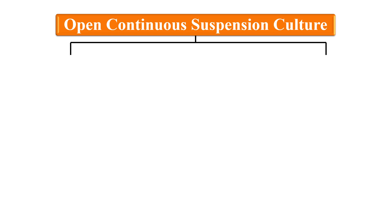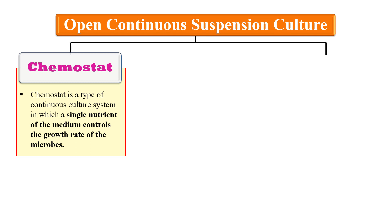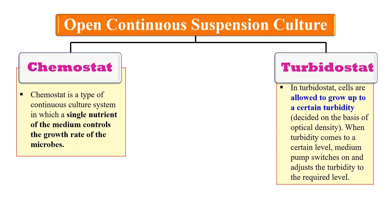Open continuous suspension culture is further of two types: chemostat and turbidostat. The chemostat is a bioreactor in which the continuous culture system is maintained by keeping a single nutrient of the medium at a limiting concentration. That single nutrient controls the growth rate. It has a continuous feed of fresh nutrient at a constant rate, and continuous removal of culture at a constant rate from the other side, keeping the volume inside constant.